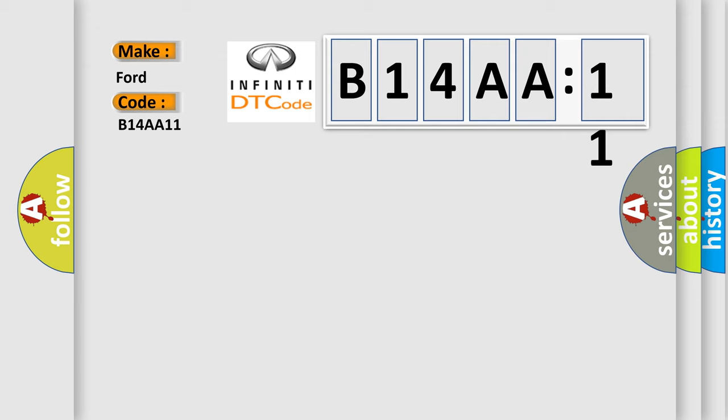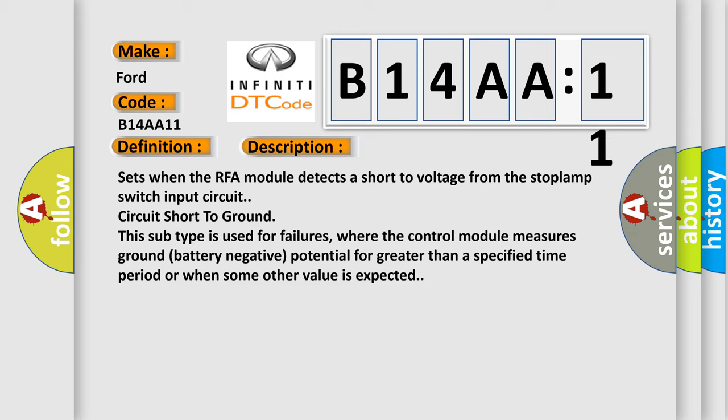The basic definition is: brake switch circuit short to battery. This is a short description of this DTC code. It sets when the RFA module detects a short to voltage from the stop lamp switch input circuit — circuit short to ground. This subtype is used for failures where the control module measures ground or battery negative potential for greater than a specified time period, or when some other value is expected.